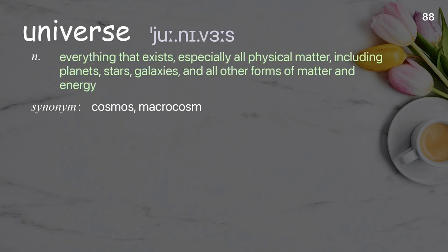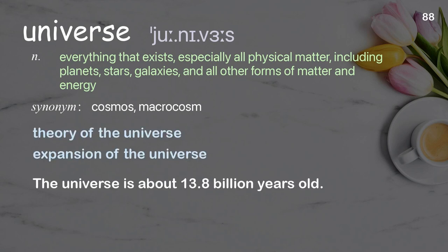Universe: everything that exists, especially all physical matter, including planets, stars, galaxies, and all other forms of matter and energy. Examples: theory of the universe, expansion of the universe. The universe is about 13.8 billion years old.